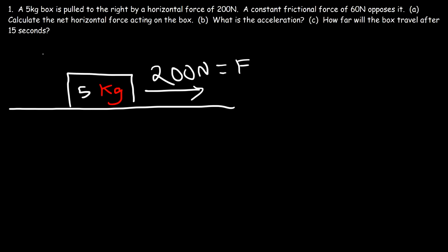Now there is a constant frictional force that opposes it. Friction always opposes motion, so if the box is moving to the right, friction is going to be directed towards the left. And the frictional force is 60 newtons. So let's write an expression for the net force.